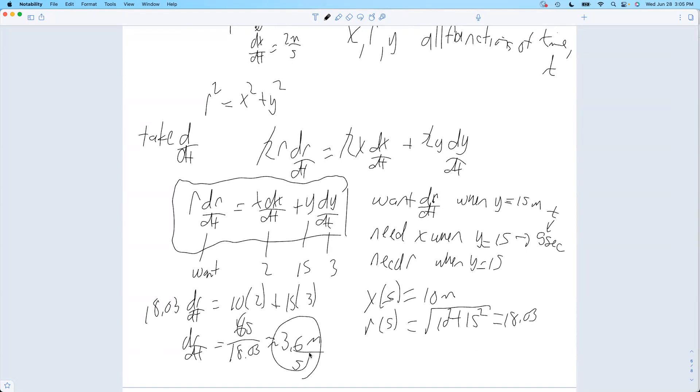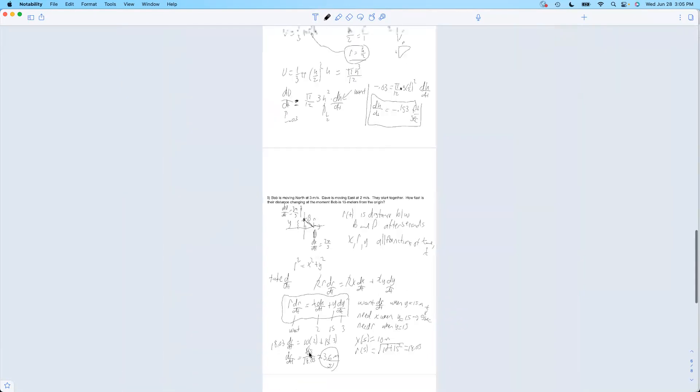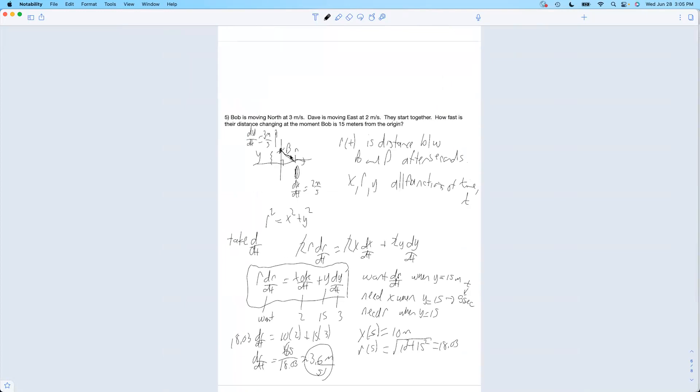So that's about 3.6 meters per second. r was measured in meters, time was measured in seconds. So just to recap, these guys are getting further and further away from each other. At the moment when Bob is at 15 meters, he's way up here 15 meters, at that particular moment the distance between these two guys is changing at a rate of 3.6 meters per second. That's a good place to stop.